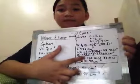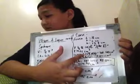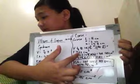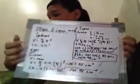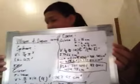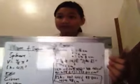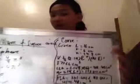The base is 3.14 times - we're gonna times 6 times 6 equals 113.04 cm squared. That was easy.